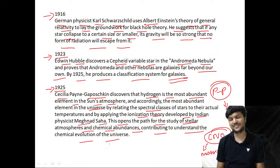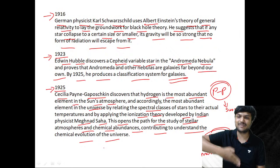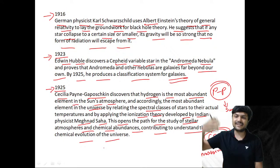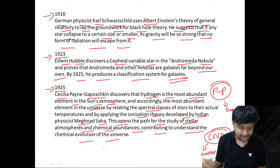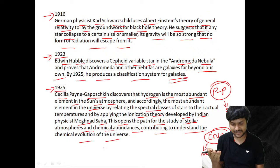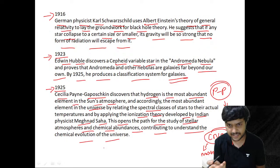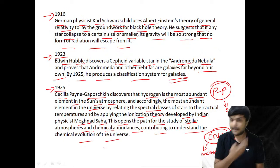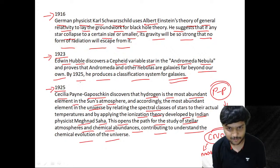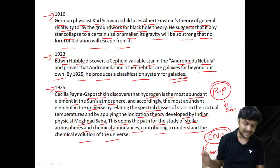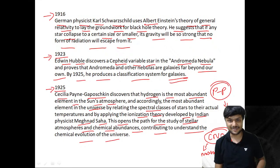In order to study the chemical elements of the universe, we look at the spectral studies of stars. These spectral classes relate to stars and their actual temperatures — using Wien's displacement law, λT = constant, you can measure the temperature of the Sun. The discovery that hydrogen is more abundant in the Sun led to the new field of studying stellar atmospheres and chemical abundance in the universe.